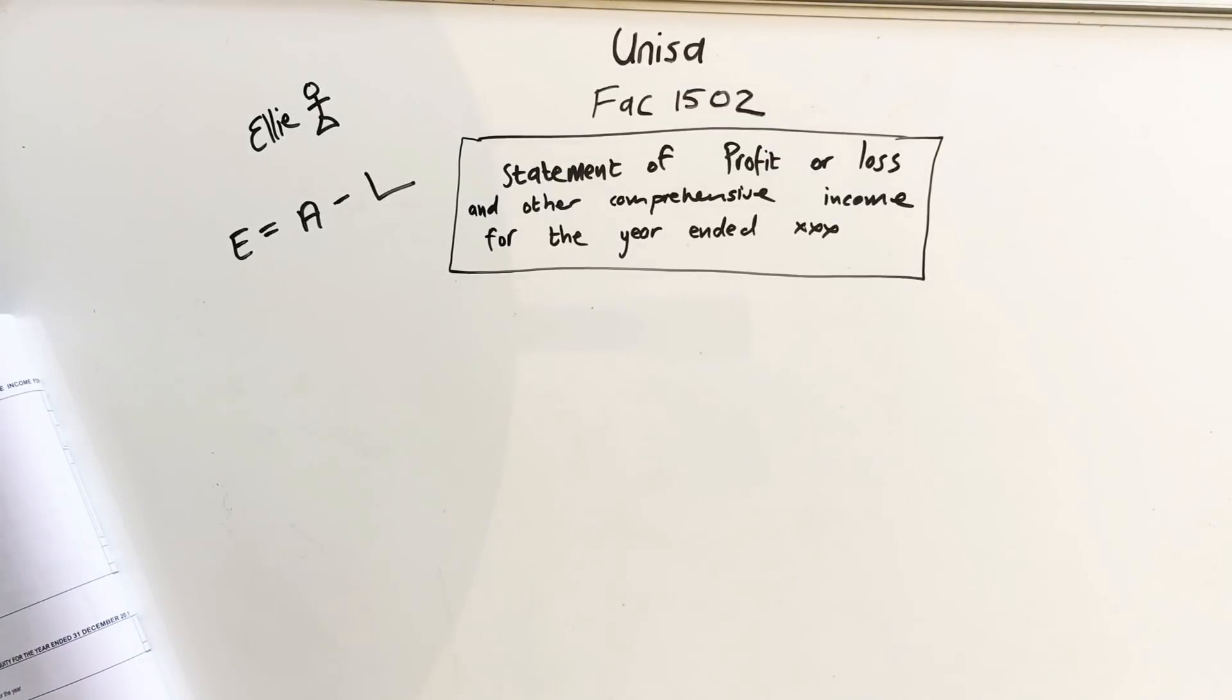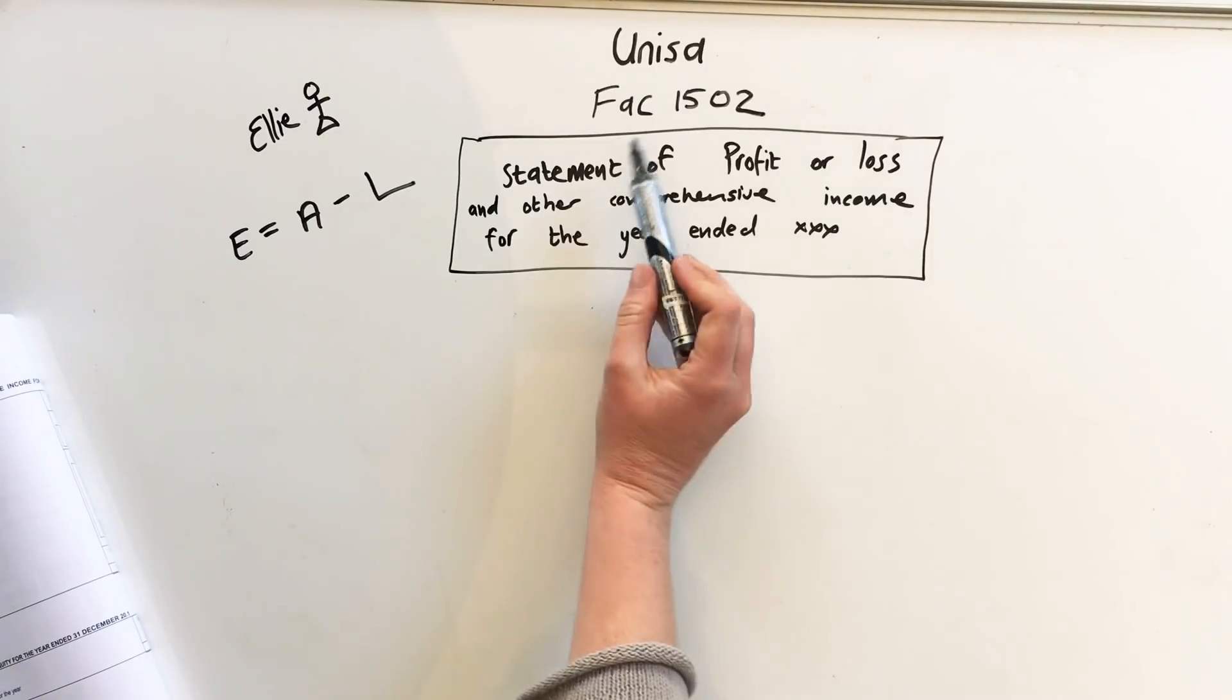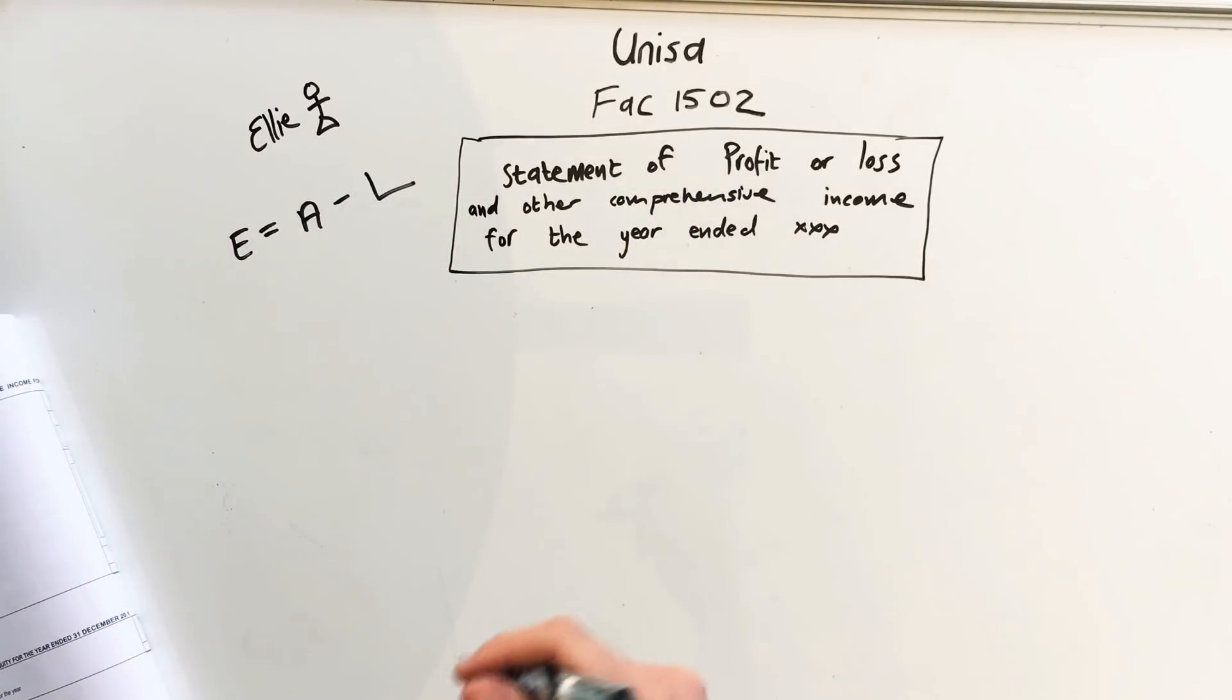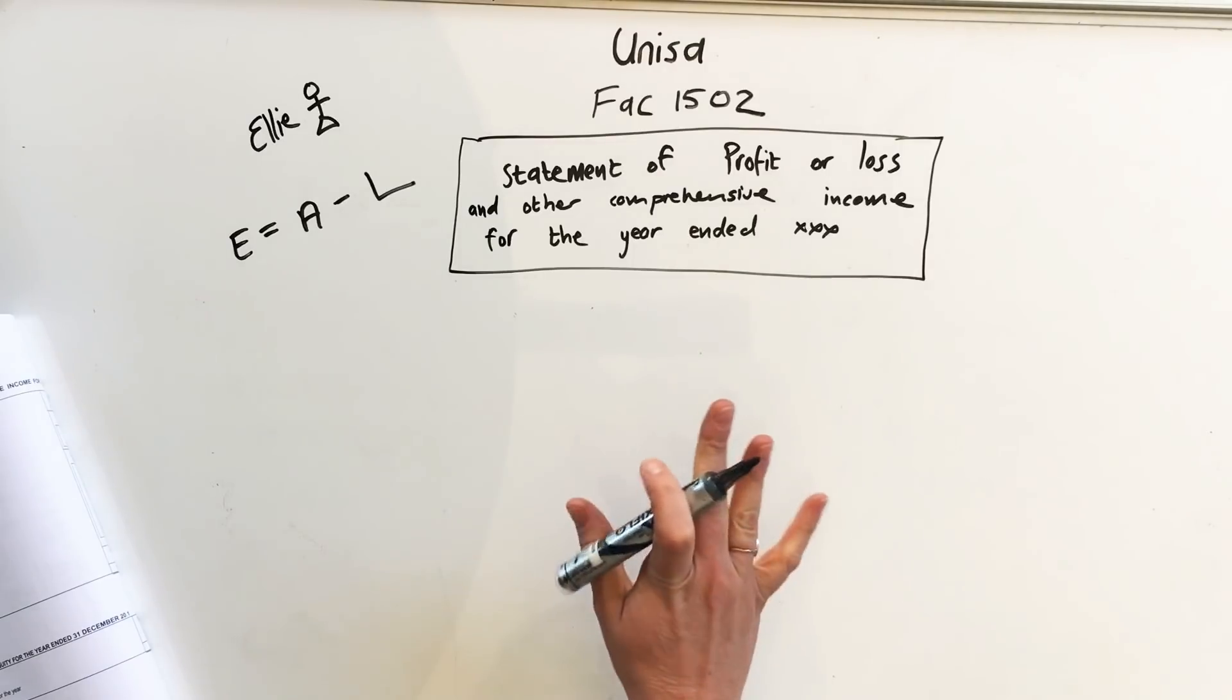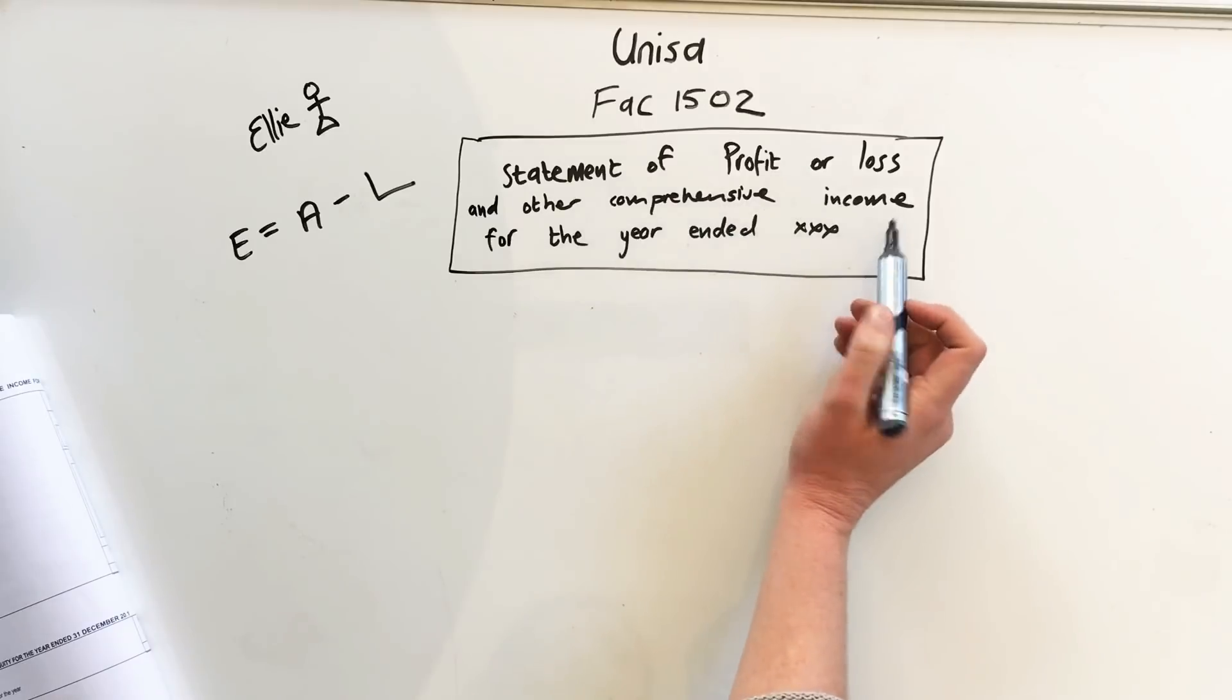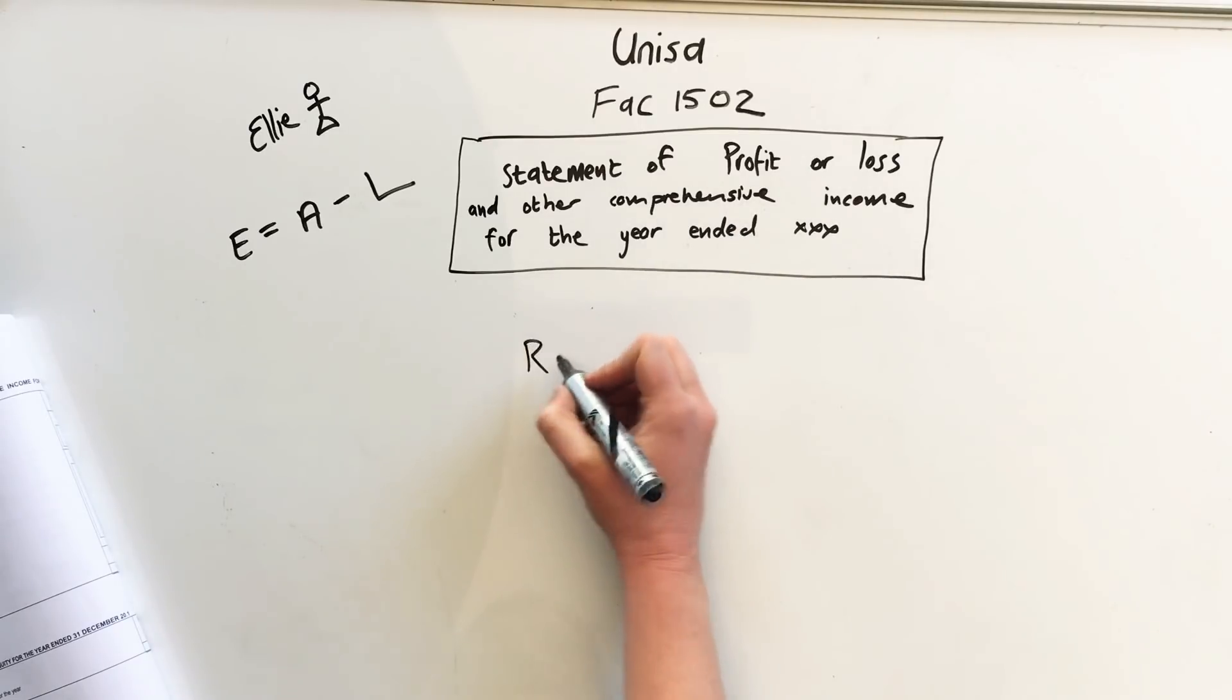Hello and welcome back. I am quickly going to run you through the statement of profit or loss and other comprehensive income for the year ended. This is for accounting 1502 through UNISA. I'm Ellie and I know we're almost writing exams, so let's get started. The skeleton for the statement of profit and loss always has the revenue.